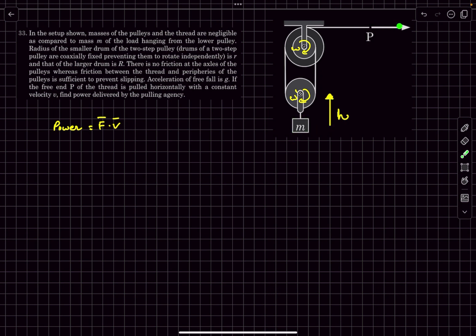Essentially the work done by the external agent is transferred as the rotational kinetic energy of the two pulleys, plus the potential energy and kinetic energy of mass M. But since the masses of the pulleys are negligible, we can neglect the rotational kinetic energy contribution and focus only on mass M. So this problem reduces to finding the work done by the tension force on mass M.